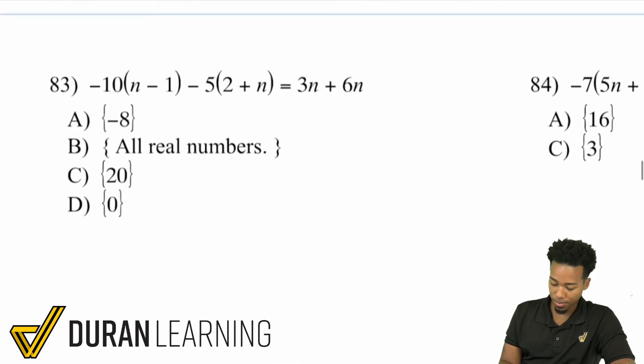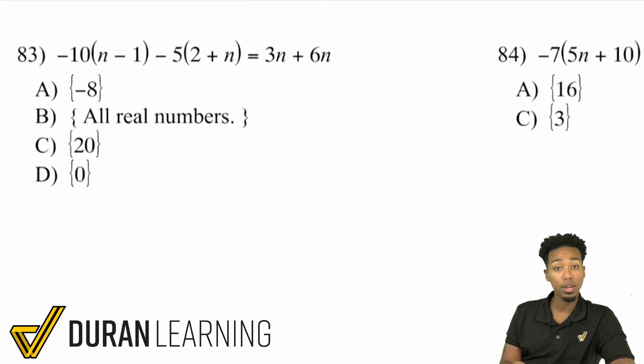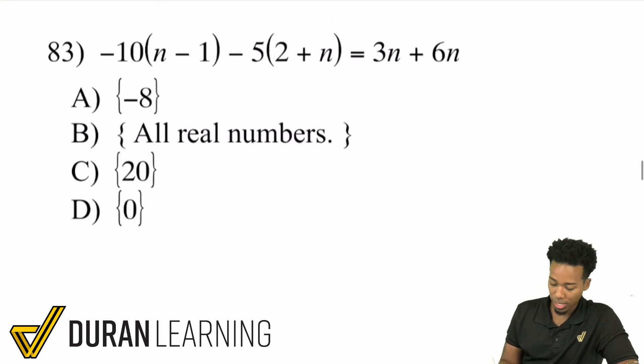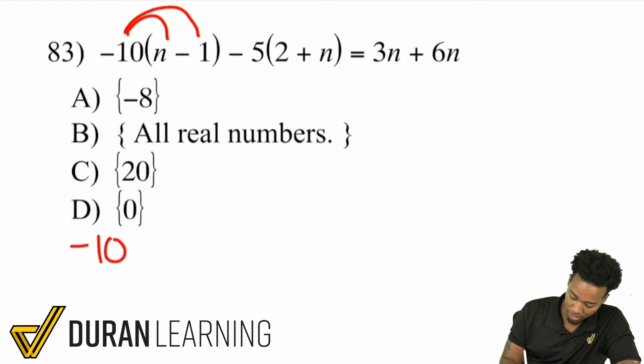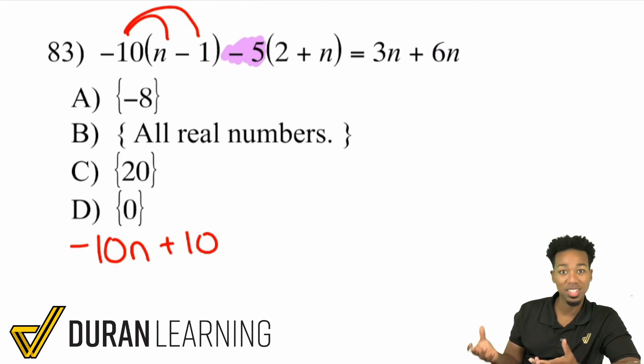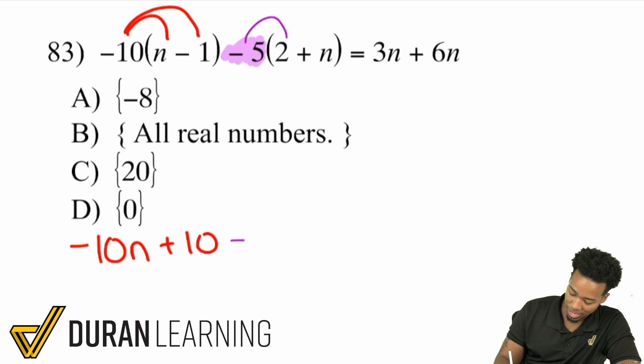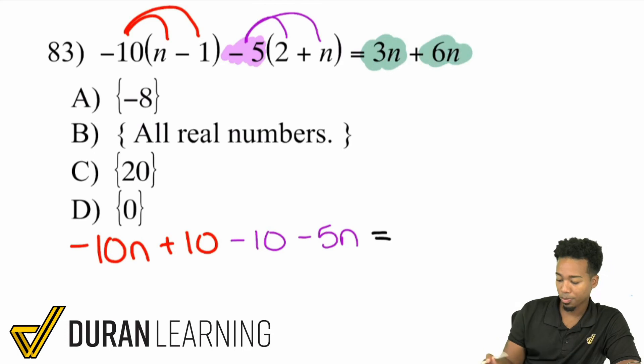After we hit that first step, I sped up the process because really, there's nothing to worry about. We're all set. Let's take it over here to number 83, and then I'll do 84 and let you do the rest. We've got two parentheses that we're going to take care of. We'll distribute that negative 10 to the n and the negative 10 to the negative 1. Negative 10 times n is negative 10n. Then negative 10 times negative 1 is positive 10. From there, we're going to distribute the negative 5. Remember, we are distributing the entire term with its sign. Negative 5 times 2 is negative 10. Negative 5 times n gives us negative 5n. On the right side, we have a potential simplification. We have 3n plus 6n and that will be 9n.